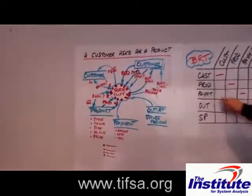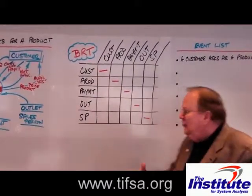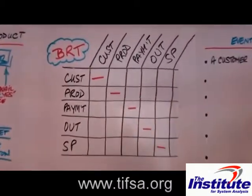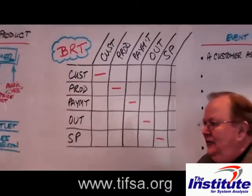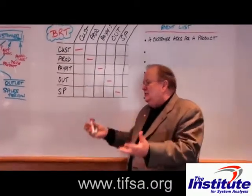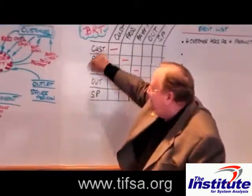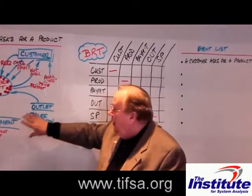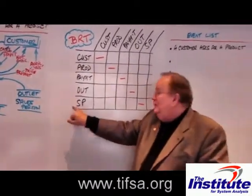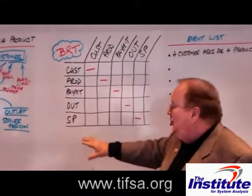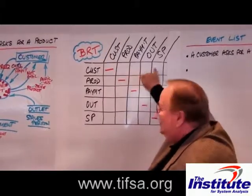Now we're going to work with this business rules table. This business rules table is a way of finding out what the business rules are that determine the behavior of the system — it's specified that we have to be able to do this, and the absence of the rule says we can't do it. I've put in the table here the name of each of the objects in this diagram: Customer, Product, Payment, Outlet, and Salesperson. I've put them across here as well and we're going to work with each of these empty cells initially.